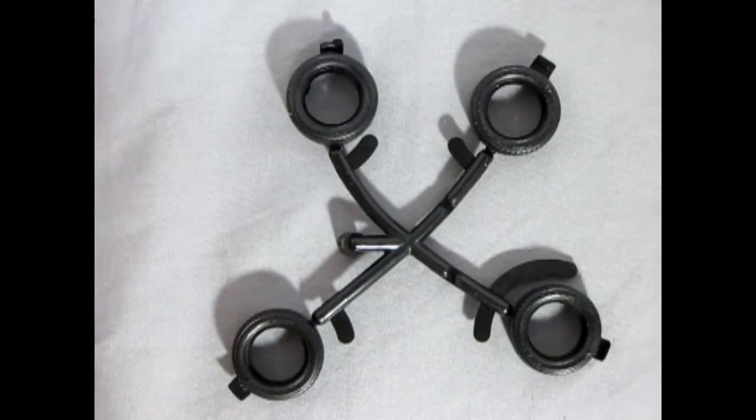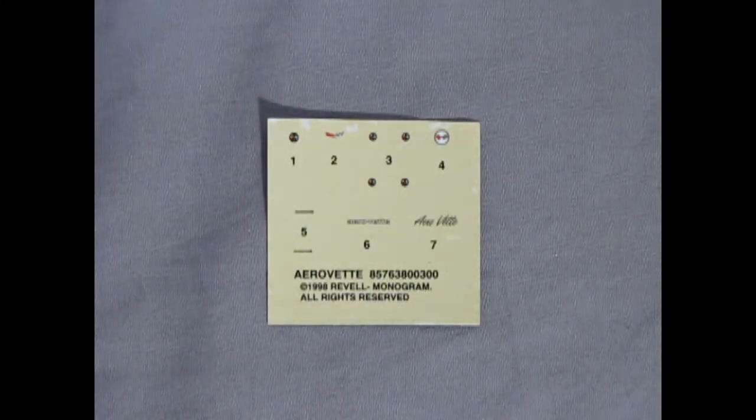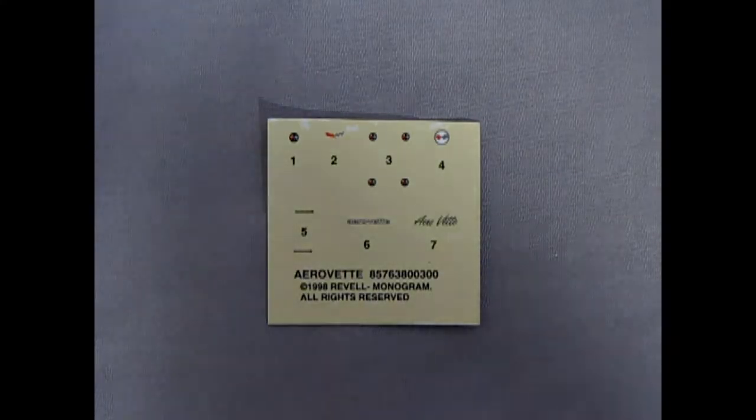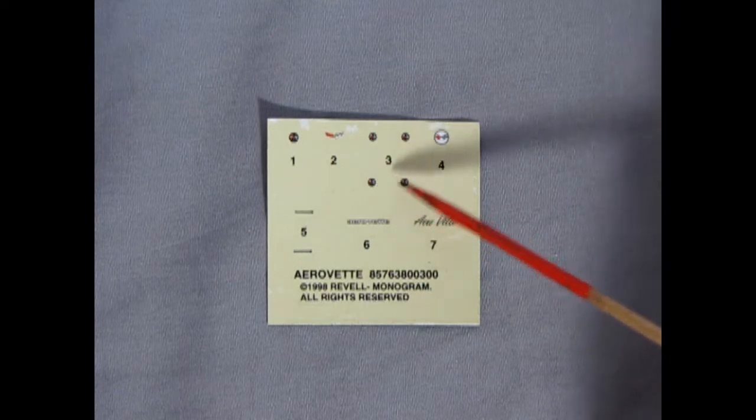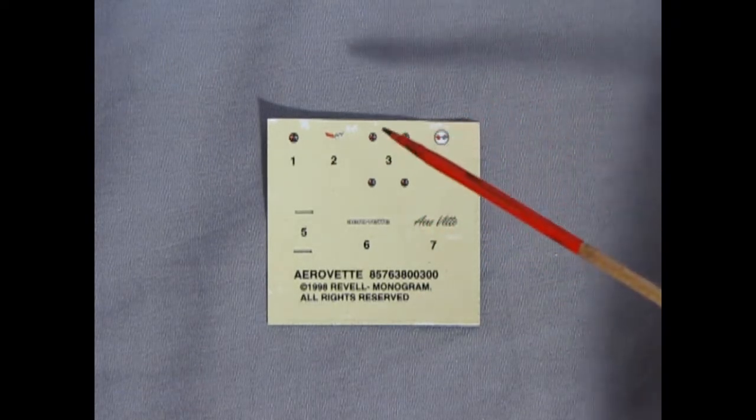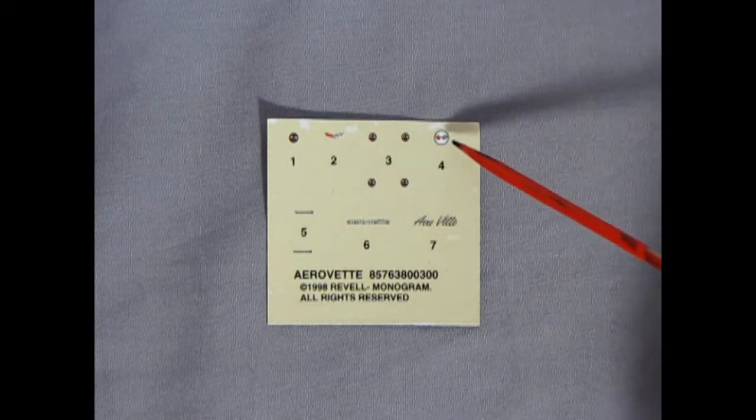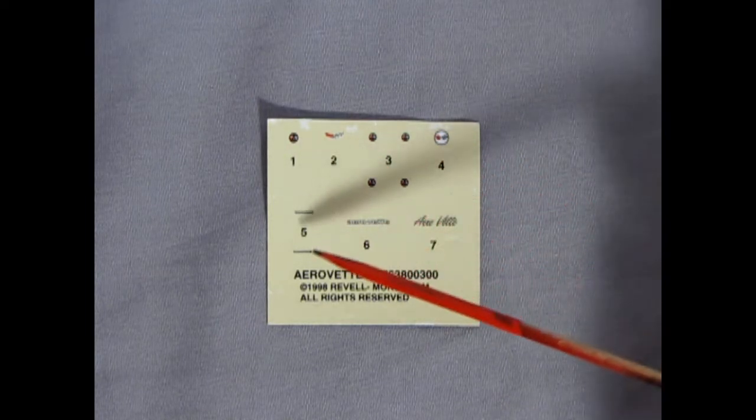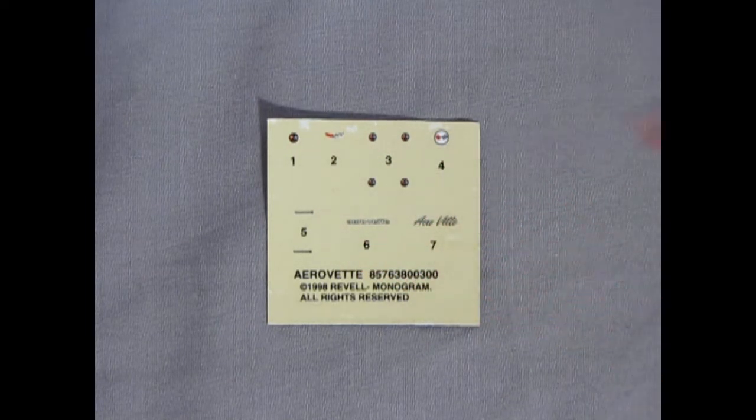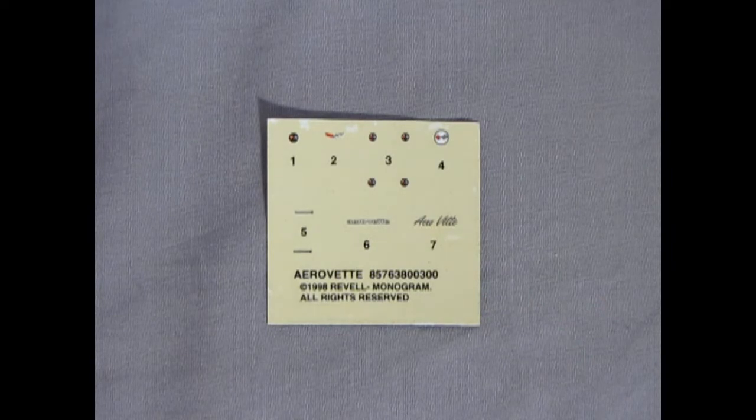Last but not least we have our decal sheet and here are the four little decals which go into the center of the wheels. There is a Chevy logo for the air cleaner or Corvette logo then ones for the hood and trunk as well as different various little scripts. There are no license plates on this car however.